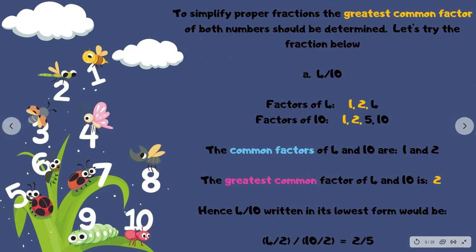To simplify proper fractions, the greatest common factor of both numbers should be determined. Let's try the fraction below. A: 4 over 10.